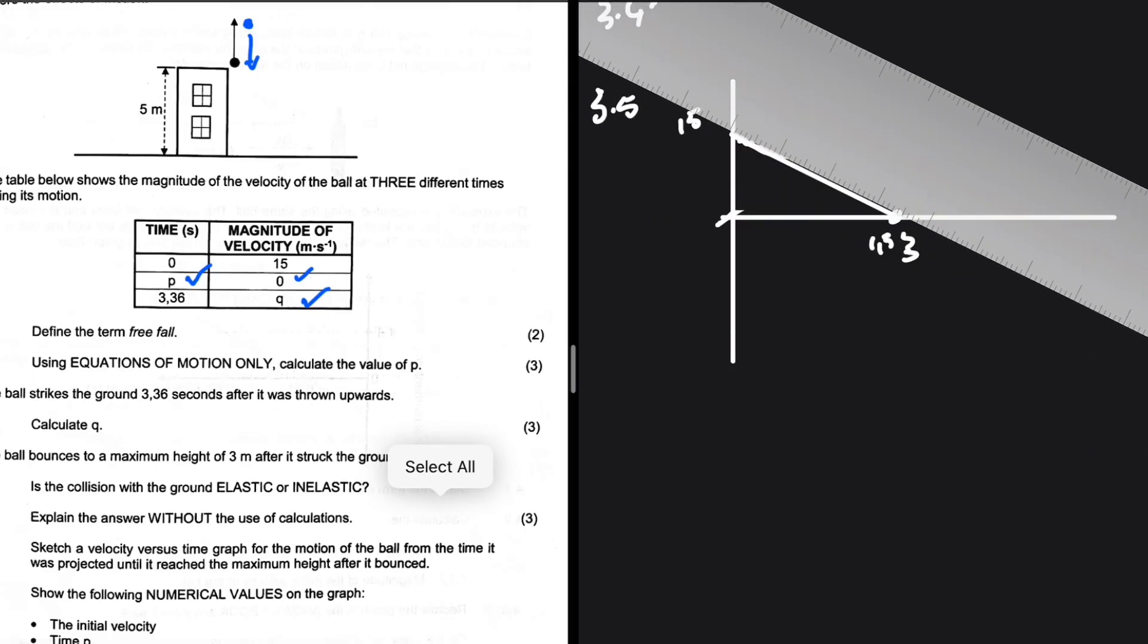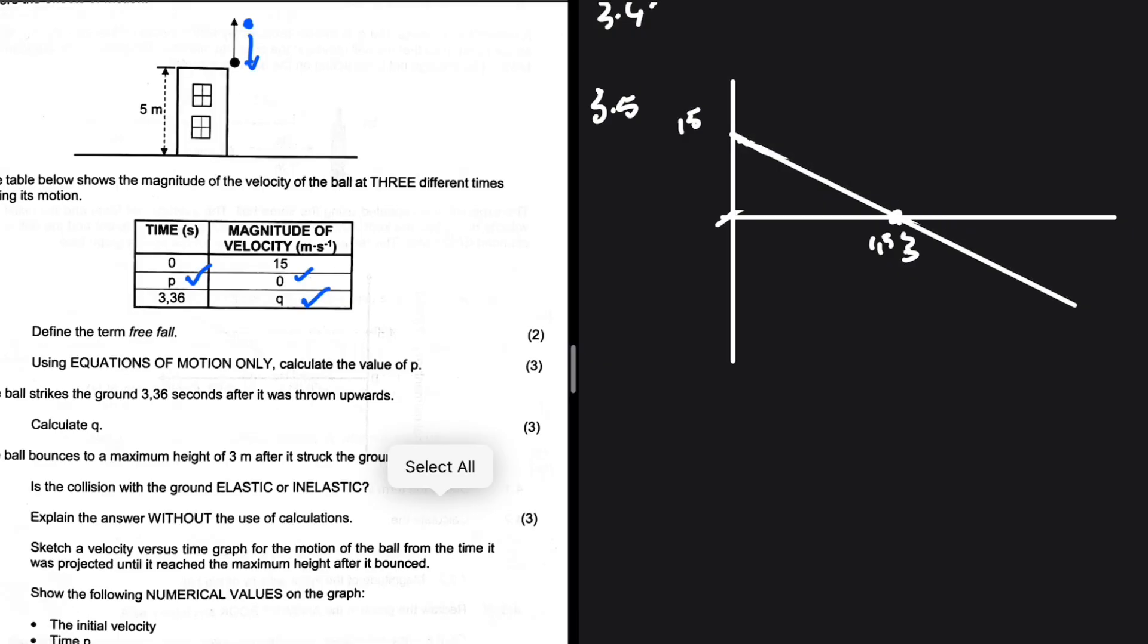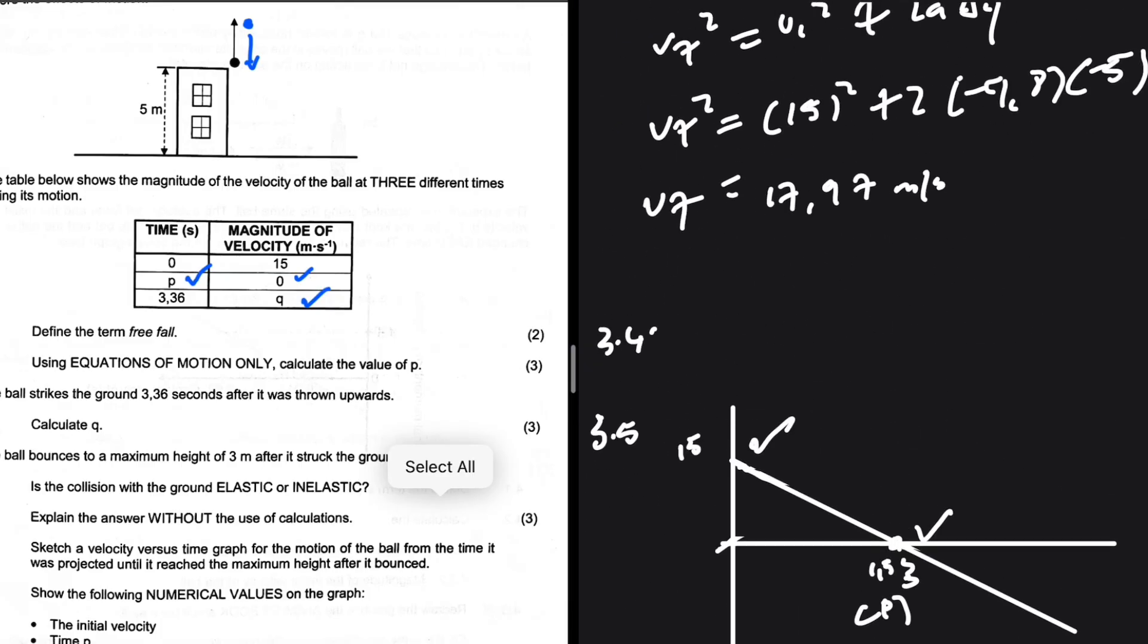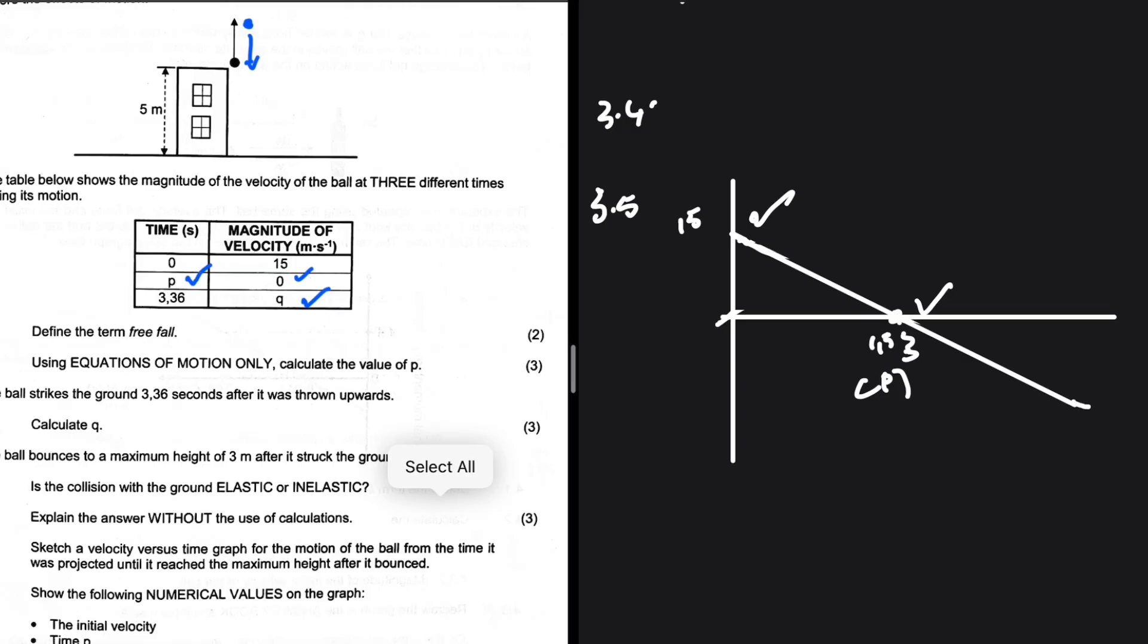Obviously we're going to have the line extending as it's now going down and the velocity is negative. So we need to also indicate time p. This is the time p, and then the initial velocity I've indicated as well. Velocity q is the velocity at which we strike the ground, 17.97. So we just need to extend the line further, and then we have minus 17.97. Obviously here we have minus 15 somewhere here, because as it passes the building on its way down.